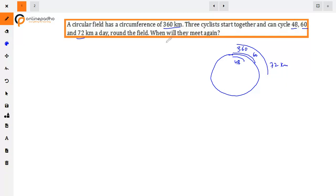They will meet again after some days. When we need to find the duration, we need the duration for each cyclist to complete one round of the field. First of all, we need to find their duration.